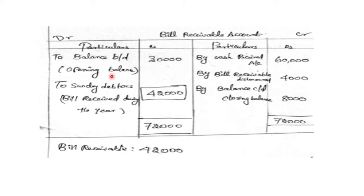Now let's see the solution. Bills Receivable Account: To balance brought down — opening balance $30,000. Next, bills received during the year.